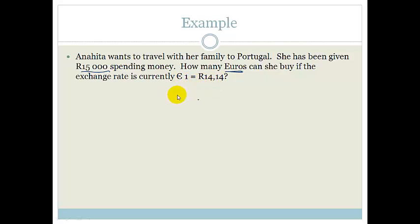So let's get that in a ratio. So we've got Euros to Rands. And we are told at the moment that 1 Euro is 14 Rands and 14 cents.